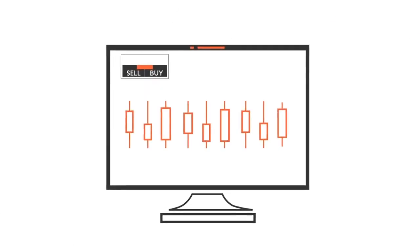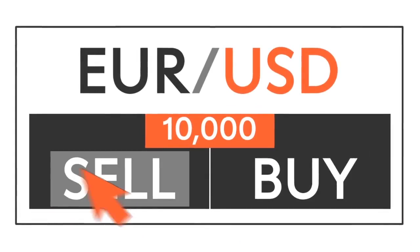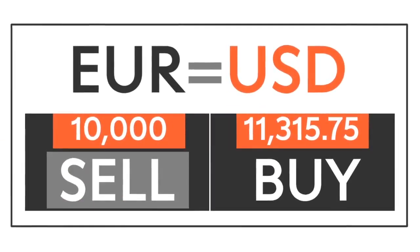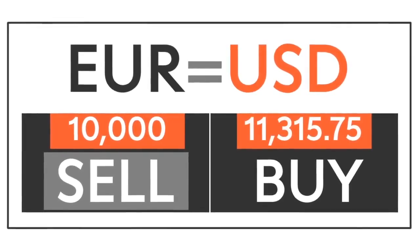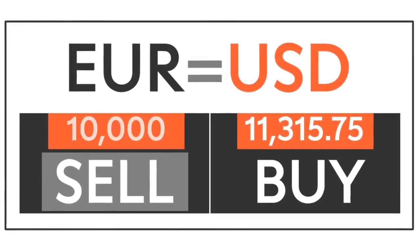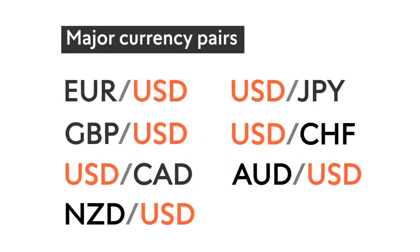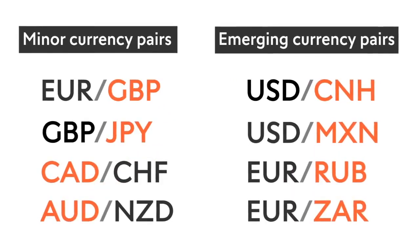For example, say you want to sell 10,000 euro for some US dollars. Your trading platform will show the currency pair and the price. The price is the amount of the quote currency that you will receive when you sell 10,000 of the base currency. Forex markets enable you to trade any two currencies in the world. The currency pairs traded most often are called the major currency pairs; others are called minor or emerging currency pairs.